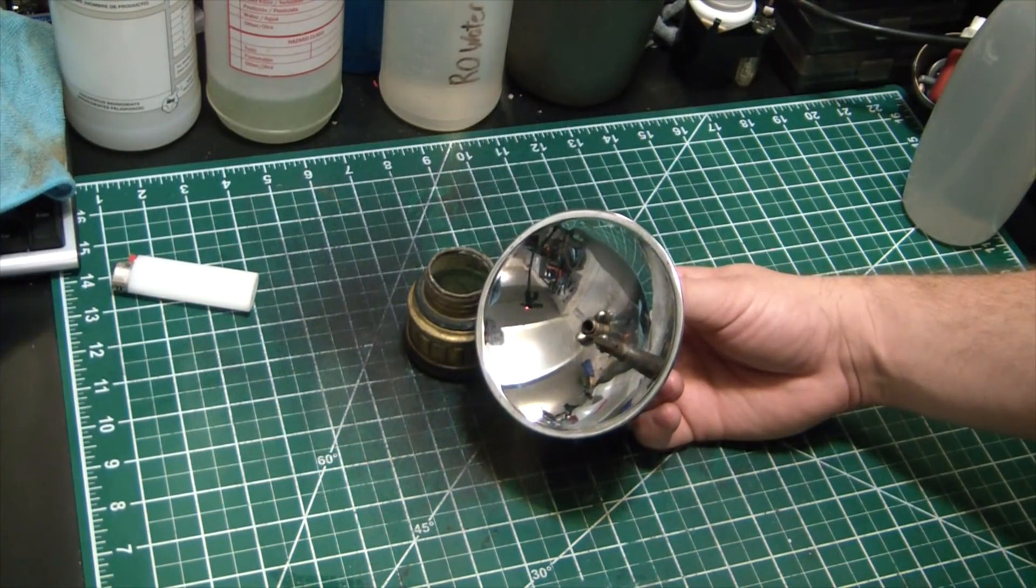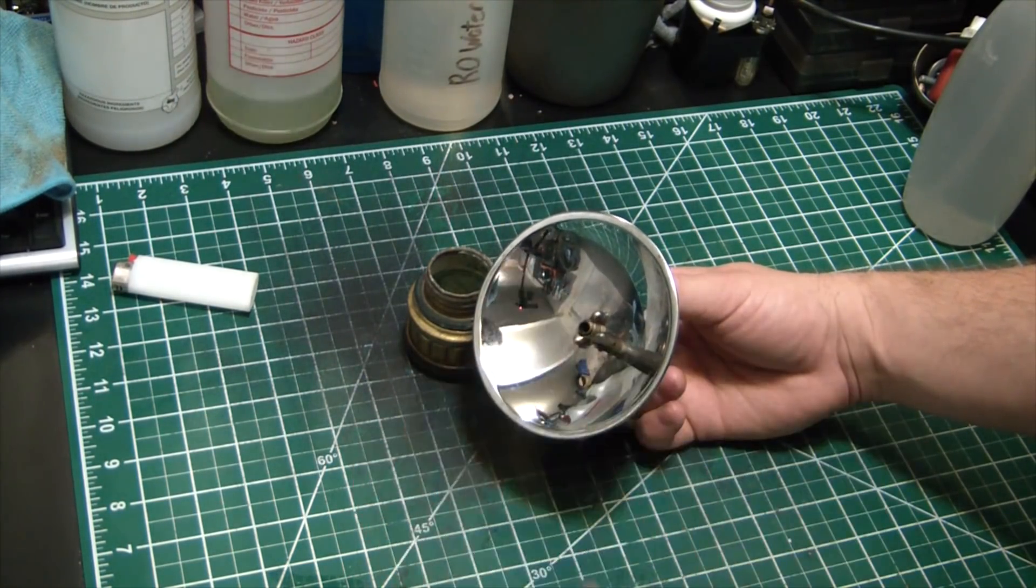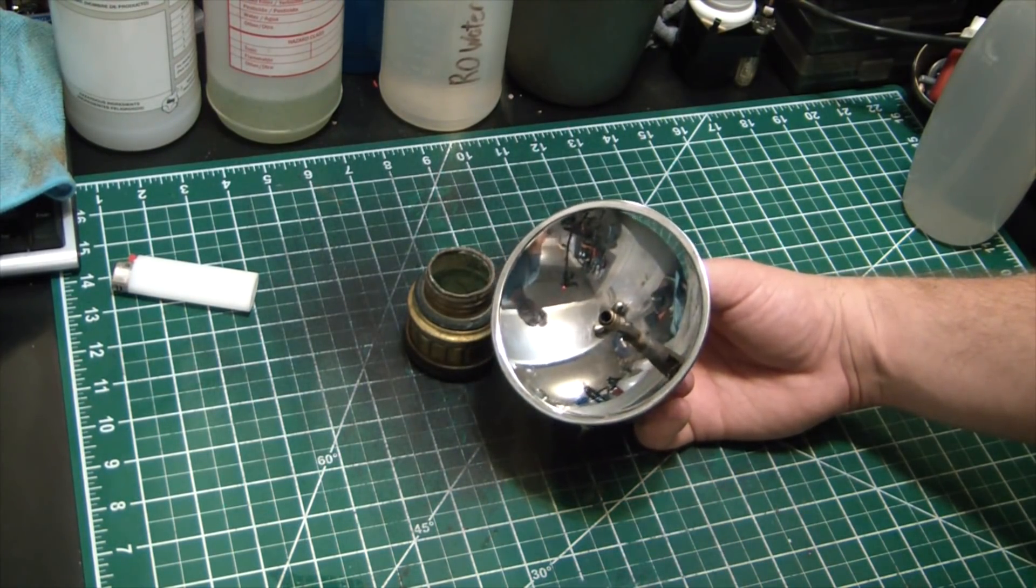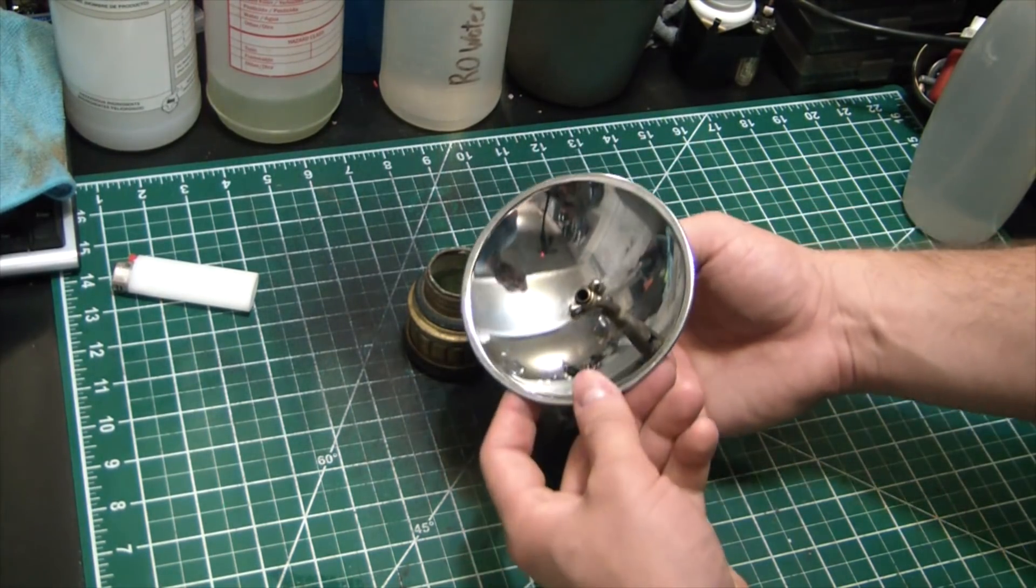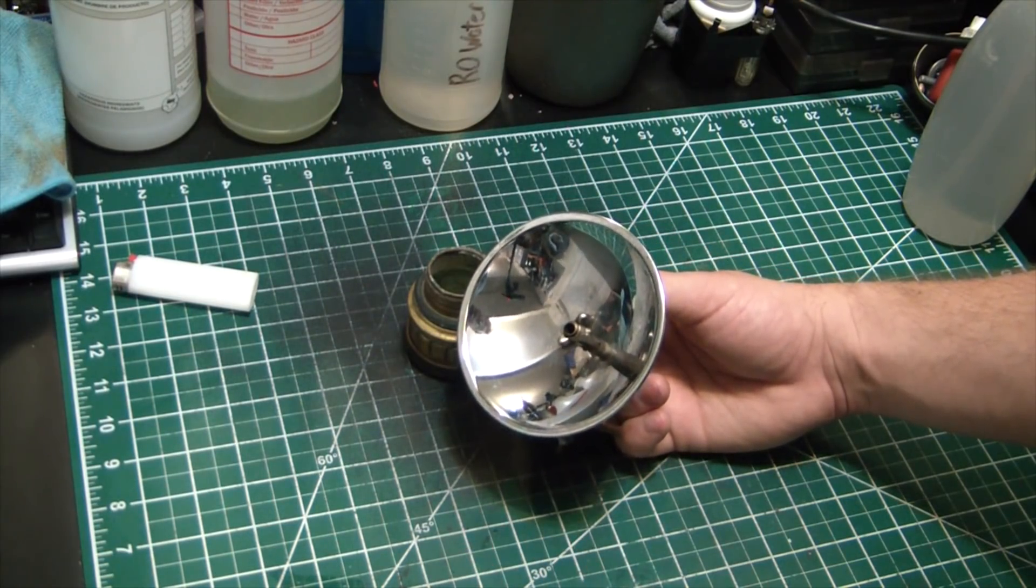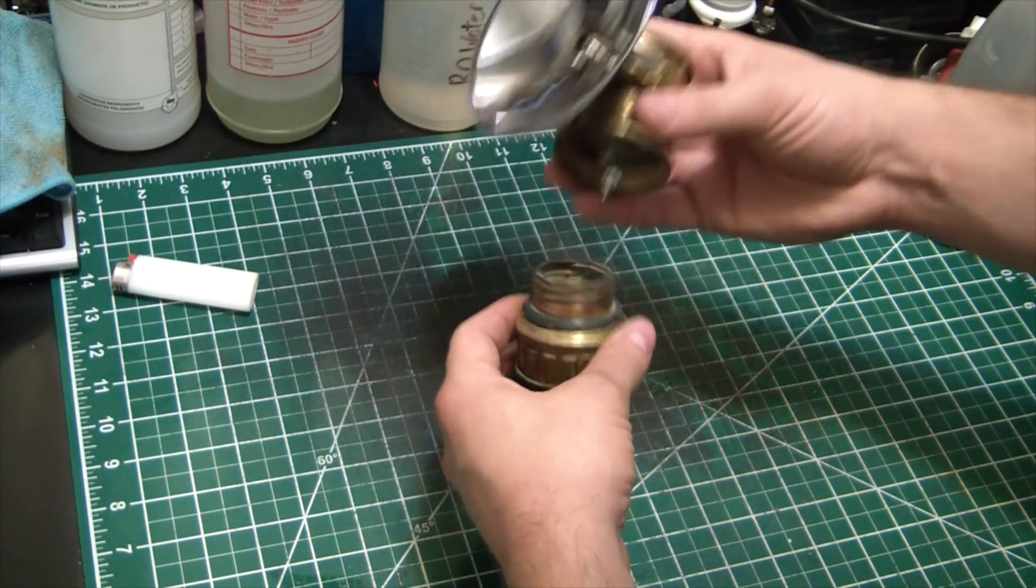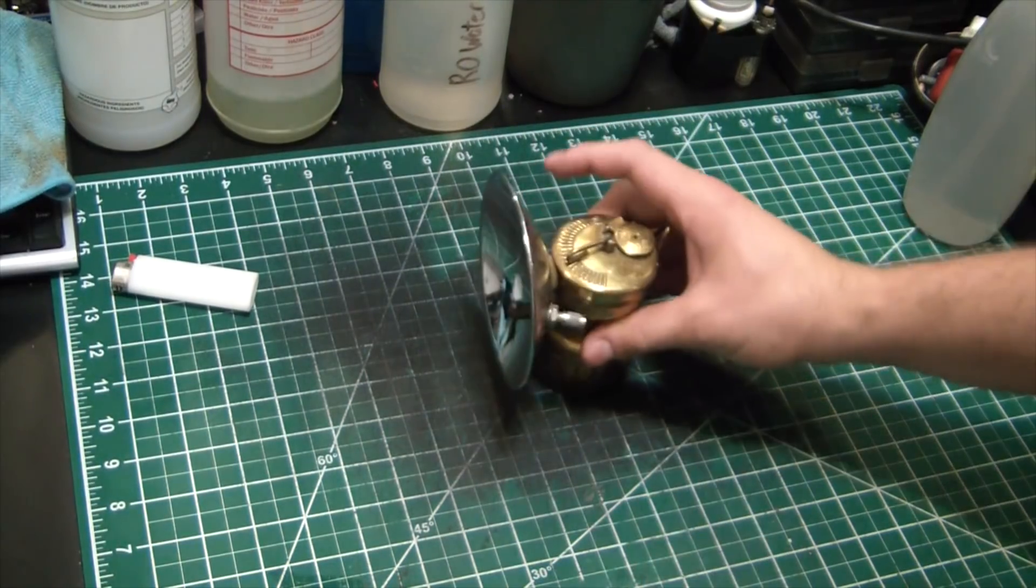So my hope is I can machine a part on my lathe to fit the tip. Now the trouble is, I can't find any specifications online about what the actual orifice diameter was for that little flame to come out of. And I'm also not sure what material they used—it was probably some kind of ceramic. But I'll hopefully just be able to make something out of aluminum, maybe steel, that'll at least let it work for a little while. So let's see if we can get this thing working. Pretty neat old piece of junk.